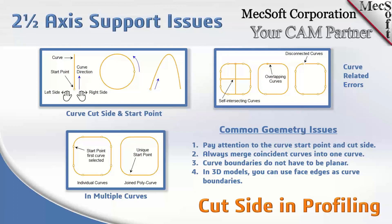A summary of common geometry issues: always pay attention to the curve start point and cut side; always merge coincident curves into one curve. Curve boundaries don't have to be planar — 3D contoured curves work too, but the same principles apply: join them end to end into a single curve. Also note that in 3D models you don't need to create separate curves — you can use the edges of your surfaces directly as curve boundaries.